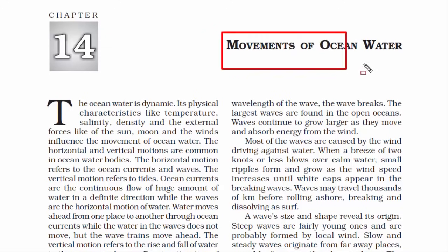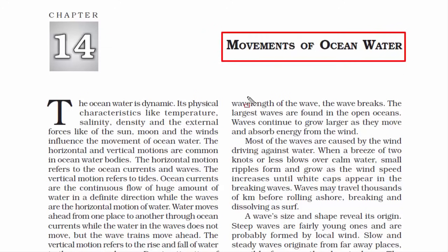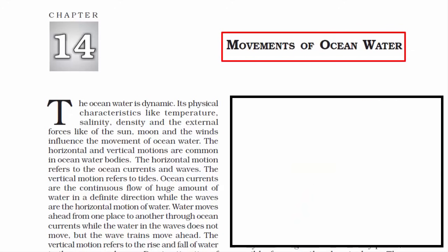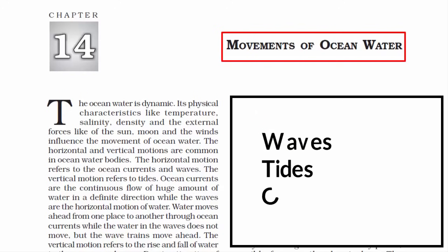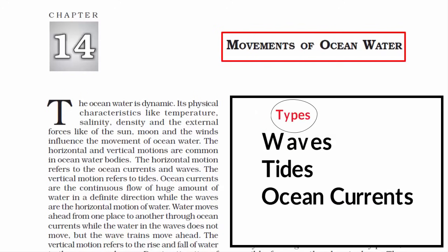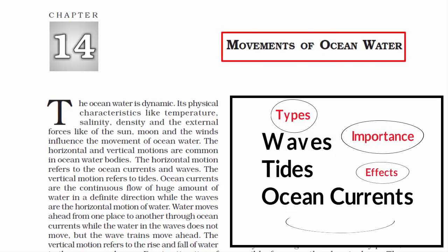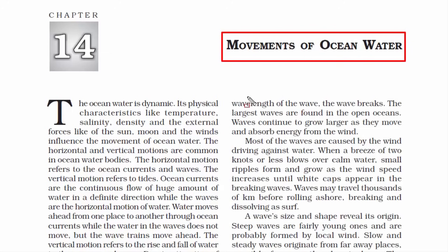This video is on Class 11, Chapter 14, Movements of Ocean Water. In this chapter, we are going to understand the vertical and horizontal movements of ocean water, then read about waves, tides and ocean currents — their types, importance, effects and how they are formed. We will cover all these things one by one in a comprehensive manner.